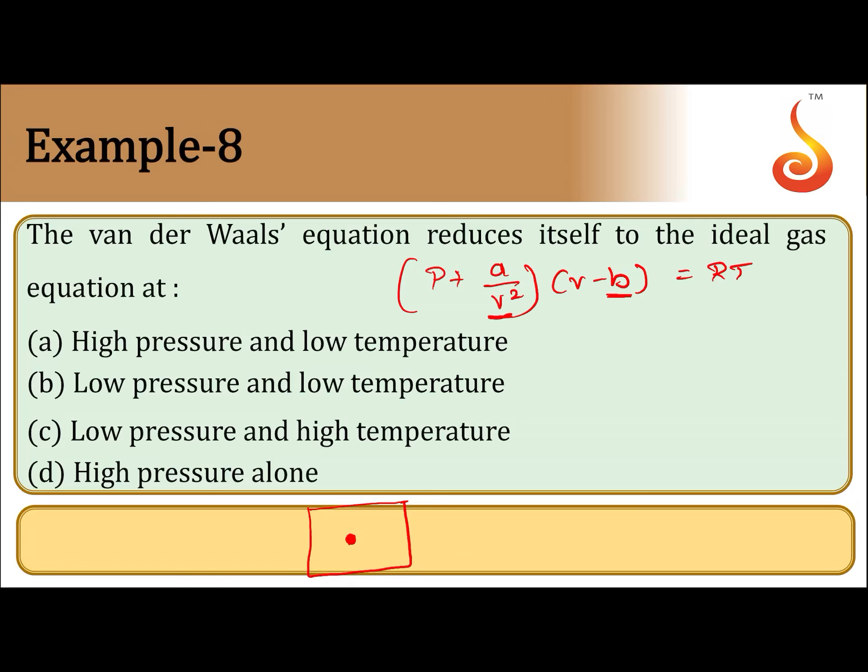What is A by V square? It is the measure of intermolecular forces of attraction. According to the kinetic theory of gases, intermolecular forces of attraction are negligible. But when pressure is high, volume is low, and if volume is low, intermolecular forces of attraction are not negligible. So we make pressure correction and volume correction in Van der Waals equation.